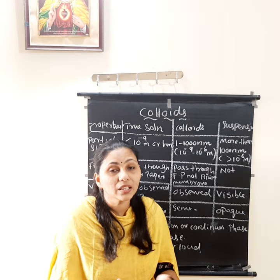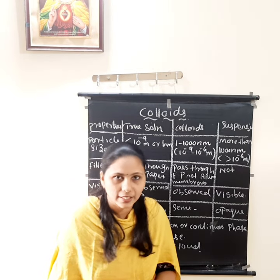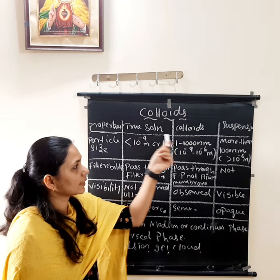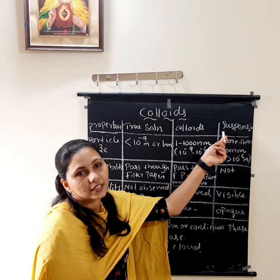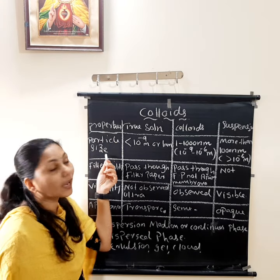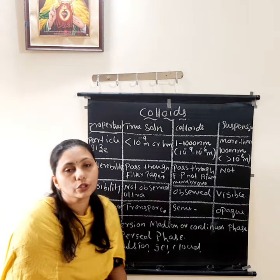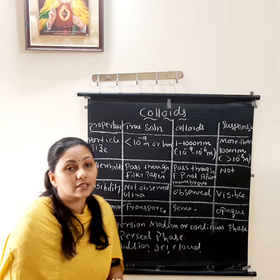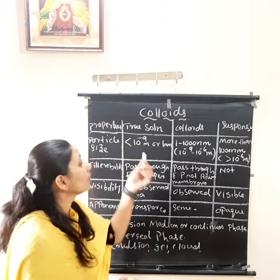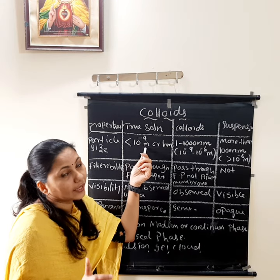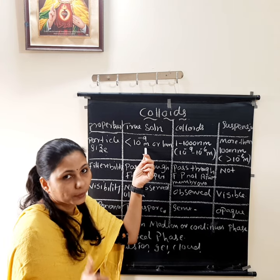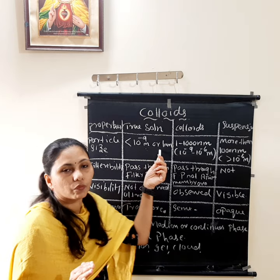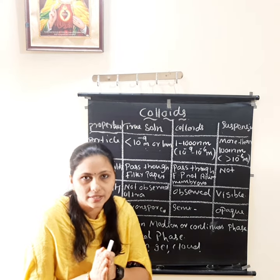First we have to know the main difference between true solutions, colloids, and suspensions. The first property is particle size. In true solution, the size of the particles is less than 10 raised to minus 9 meter — that is 1 nanometer. So the particle size is very small in case of true solutions.